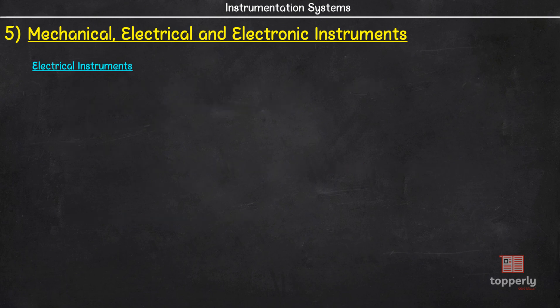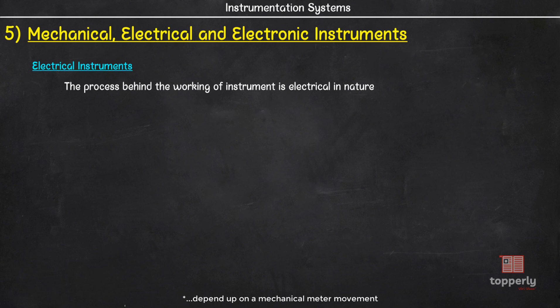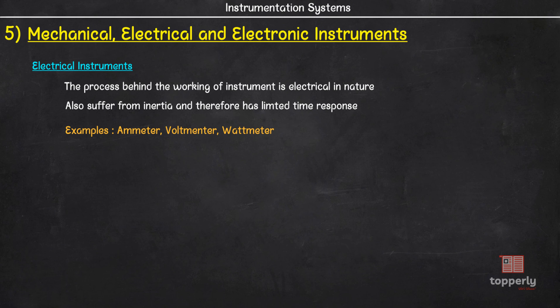Electrical instruments are those devices that use electrical methods for indicating the output. However, in most cases, these systems depend upon a mechanical meter movement as indicating device. For example, although an ammeter depends on electrical methods to produce the output, the indication is shown using a mechanical pointer. This mechanical movement has some inertia and therefore these instruments have a limited time response. So when we need to measure rapidly changing responses, we use electronic instruments.